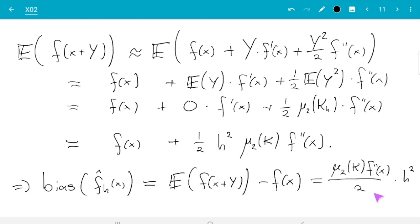And we still need to discuss this a bit. But there are a few things we can already see. So first there's an h squared here. So if the bandwidth goes to 0 then nothing else depends on h. The bias will go to 0 quadratically in h. So that sounds good.